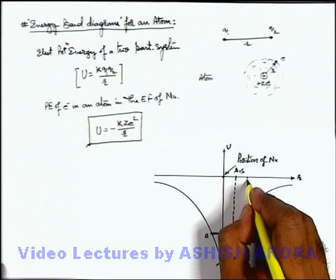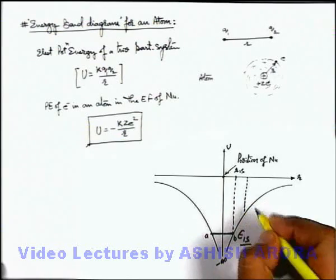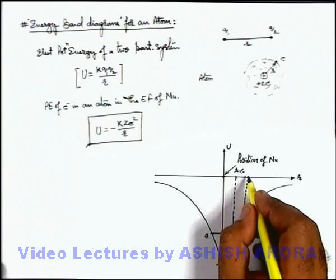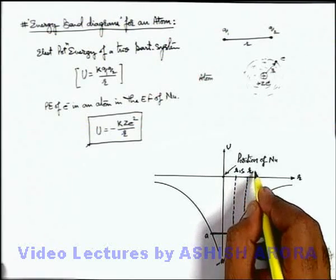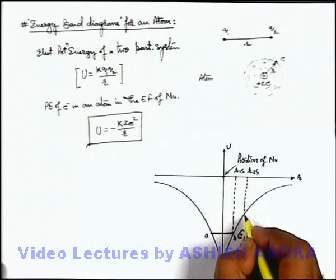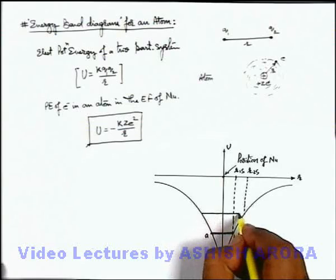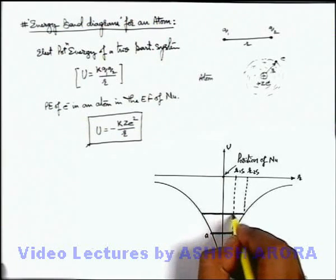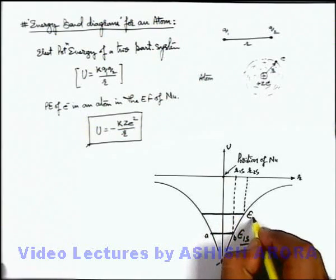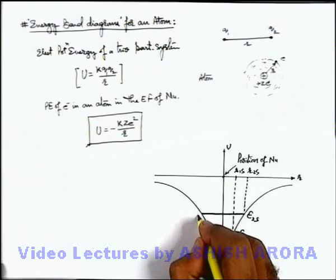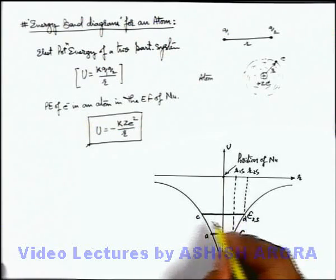The second orbital in the surrounding of nucleus where electron can exist is at a distance r 2s, which is corresponding to 2s orbital. And here the energy of electron can be written as E 2s. So this say, electron can move between point c and d.